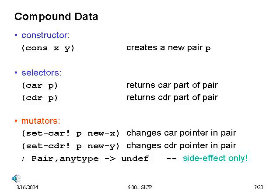Not only can we mutate simple objects, we can also mutate other basic data structures. For pairs and lists, we have mutators: `set-car!` and `set-cdr!`. `set-car!` takes a pointer to a pair p and a new value, and changes the car part of the pair to point to that new value. Similarly, `set-cdr!` changes the cdr part. Note the type: these procedures take a pair and something of any type, and return undefined because they are used strictly for their side effect — changing the structure associated with the pair.